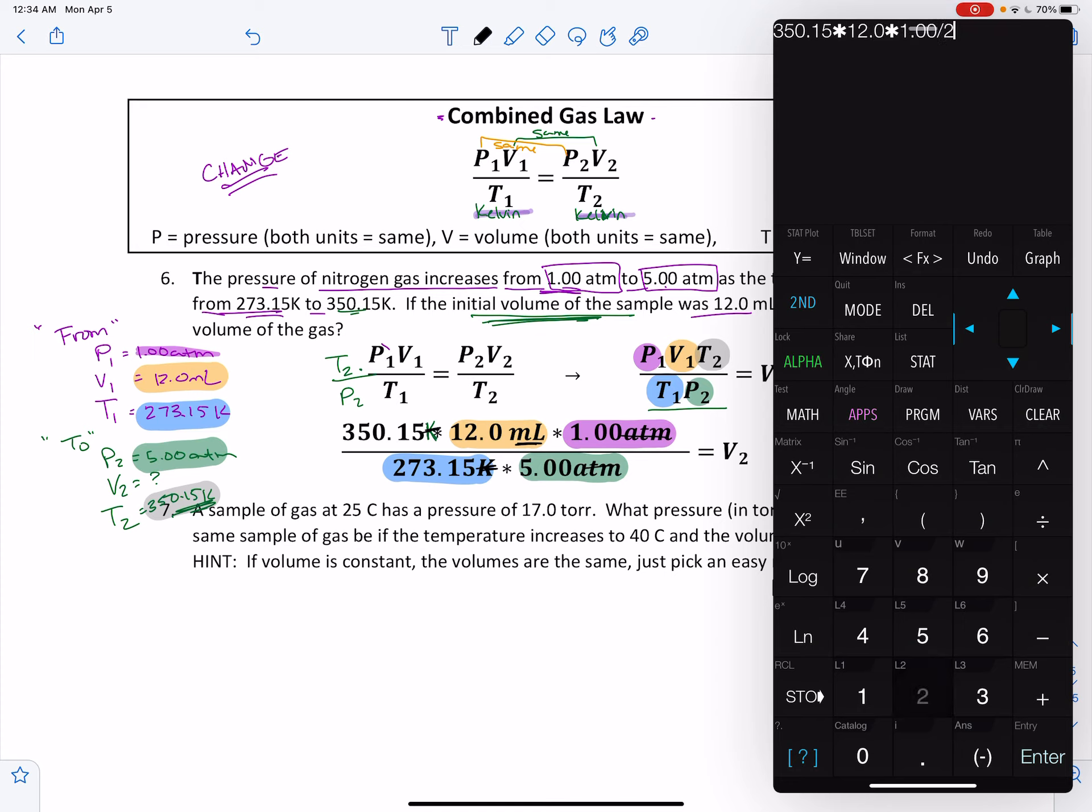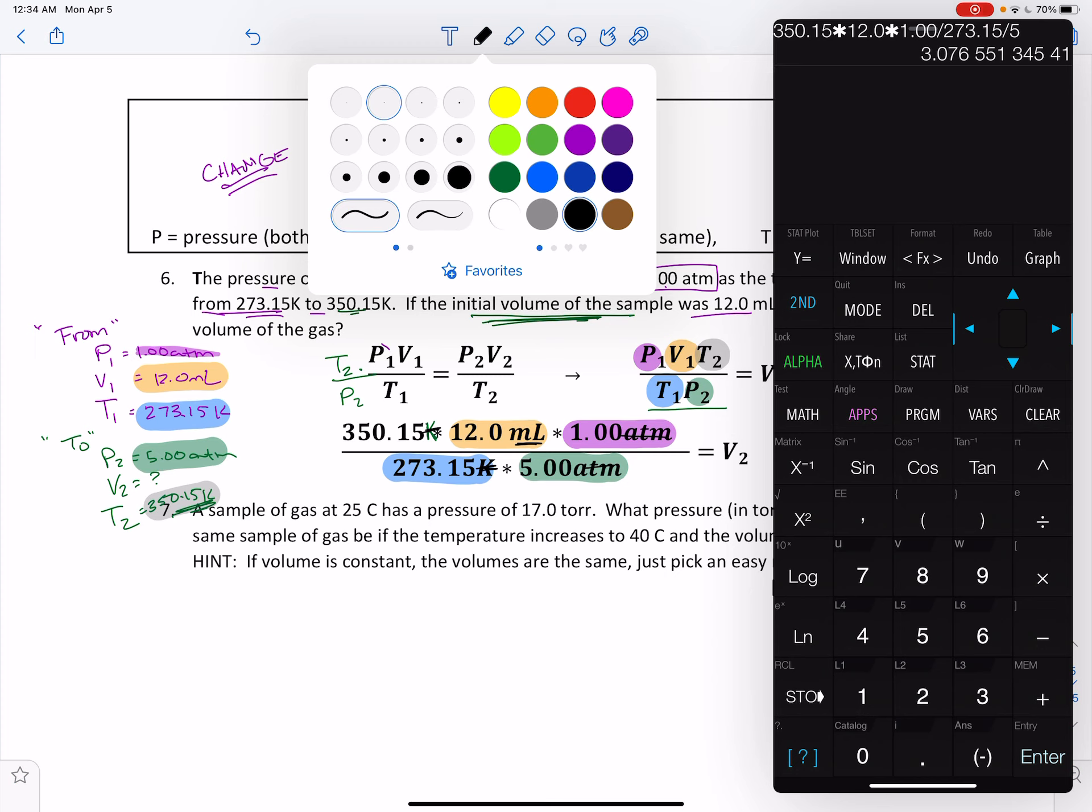Oh, you don't have to put the one in. 273.15 divided by 5. If you don't use two divided by signs like that, make sure you've got parentheses around it in the denominator.